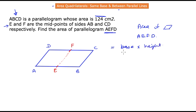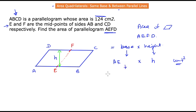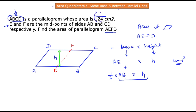The area of parallelogram AEFD equals base AE times height h. Since E is the midpoint of AB, AE = ½ × AB. So the area equals ½ × AB × h. Now AB × h is exactly the area of parallelogram ABCD, which we can replace with the given value of 124 cm².